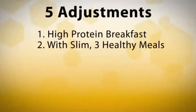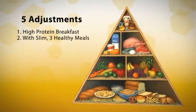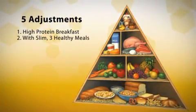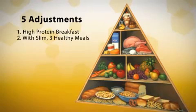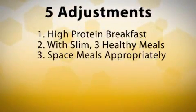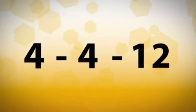Number two, along with BIOS Life Slim, eat three healthy, well balanced meals that include lean protein, healthy fats, and complex carbohydrates. Number three, space your meals appropriately. Allow at least four hours between breakfast and lunch, four hours between lunch and dinner, and twelve hours between dinner and breakfast, allowing your body to burn fat even while you sleep.